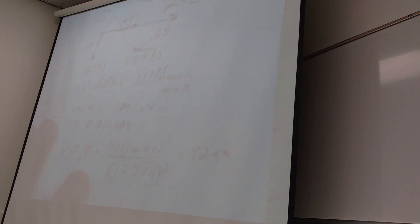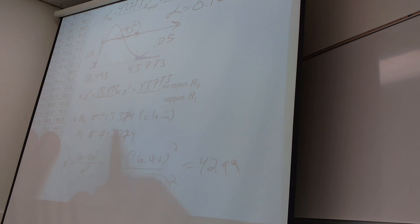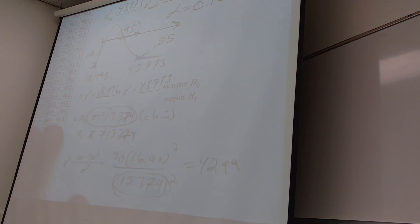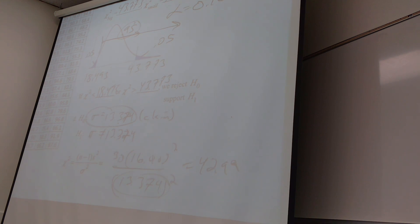Where did you get the 13 from? On the claim. Yeah. So we're assuming that this is true, just like the old hypothesis tests. Where did you get this mu from for your Z-star? The hypothesis test statement, right? We're assuming that's true and we're seeing that we're so far away that it can't be true.